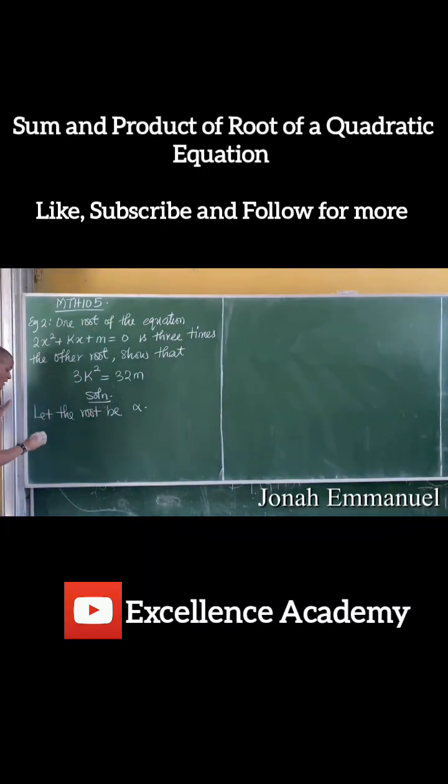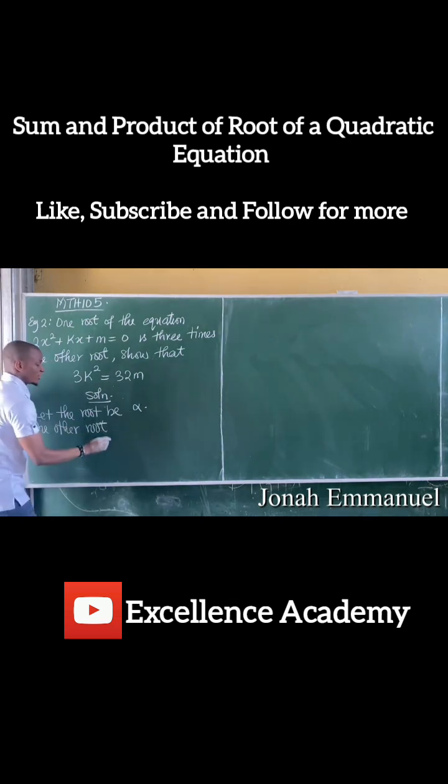So if one of the roots is alpha, then the other root, which is three times the initial one, becomes three alpha. So my roots become alpha and three alpha, three alpha because it's three times the other root.